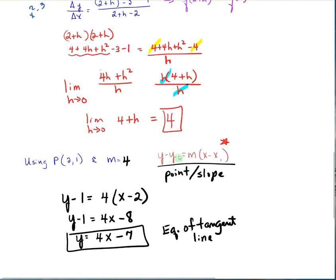We need to remember point-slope form: y minus y1 equals m times (x minus x1). Plugging in what we've got: y minus 1 equals 4 times (x minus 2). So we've plugged in our 2, our 1, and our 4. Distribute: 4x minus 8. Add the 1 over: y equals 4x minus 7. That is the equation of the tangent line. In section 2.1 problems, we'll do both — some average rate of change, and some where we find the slope of a curve and the equation of the tangent line.